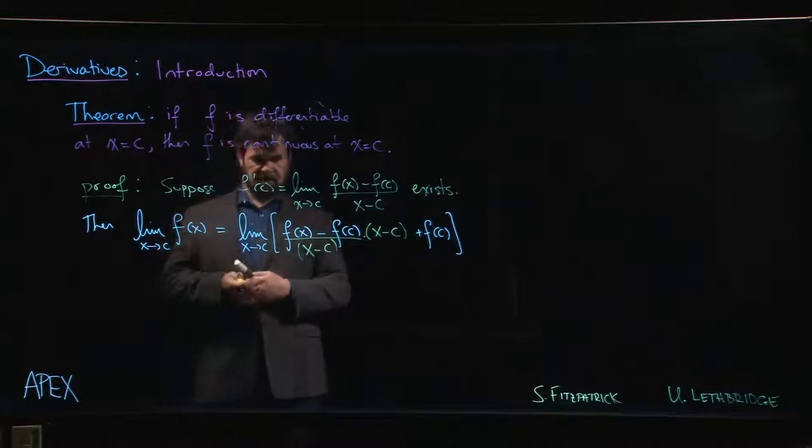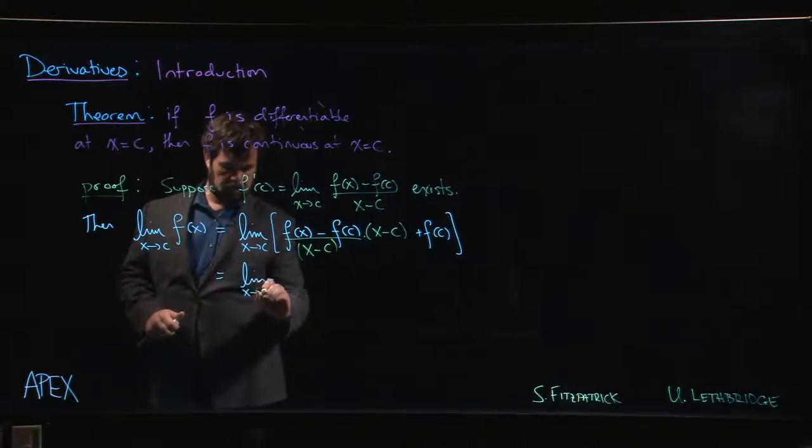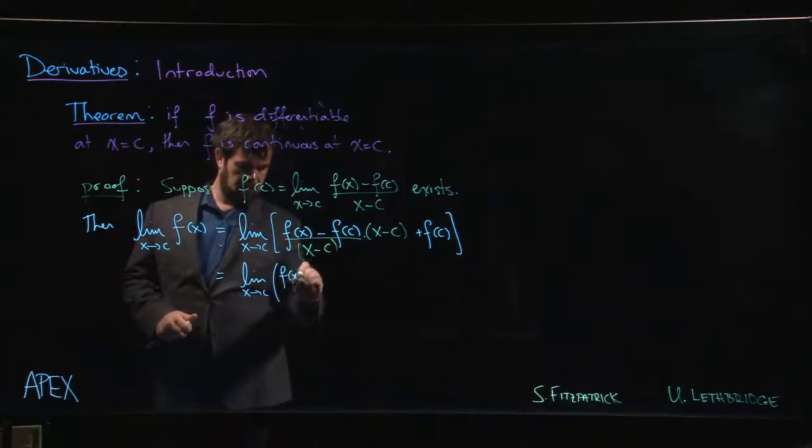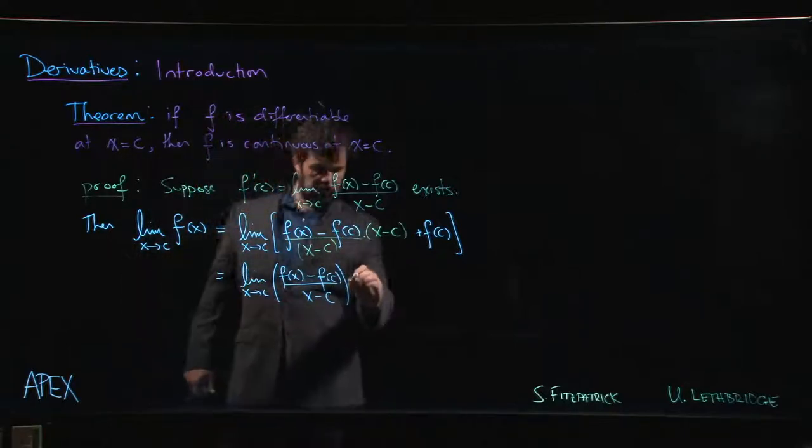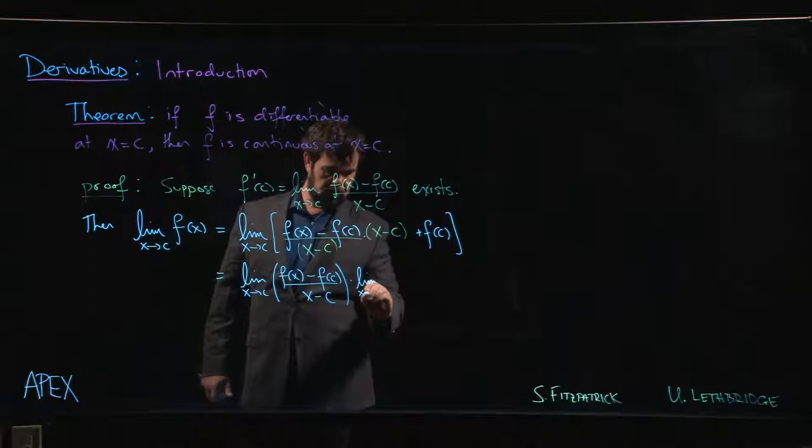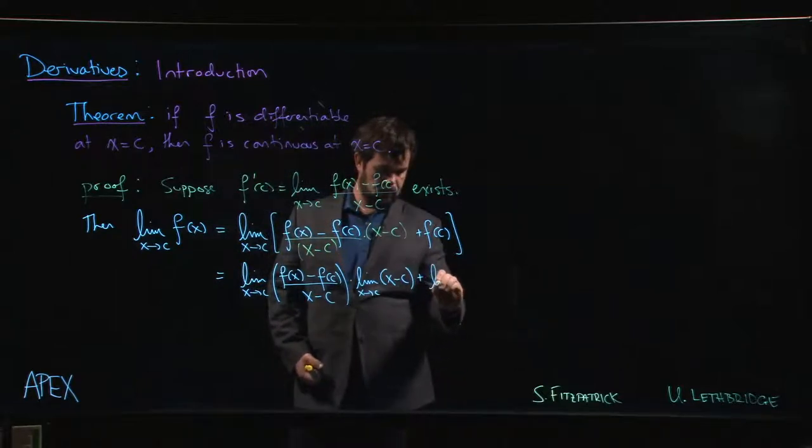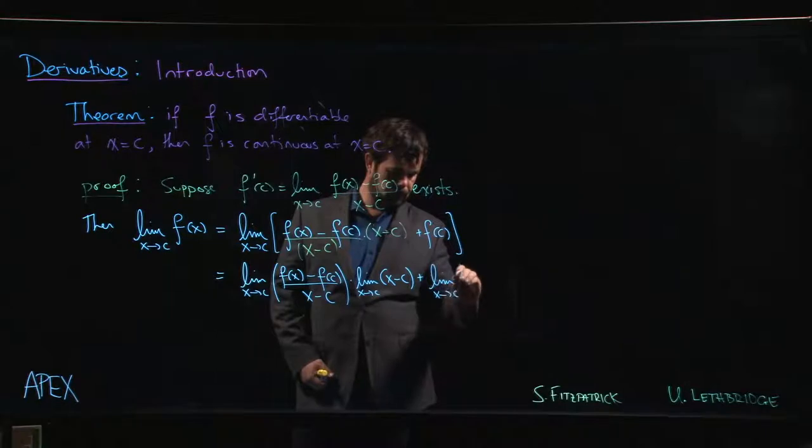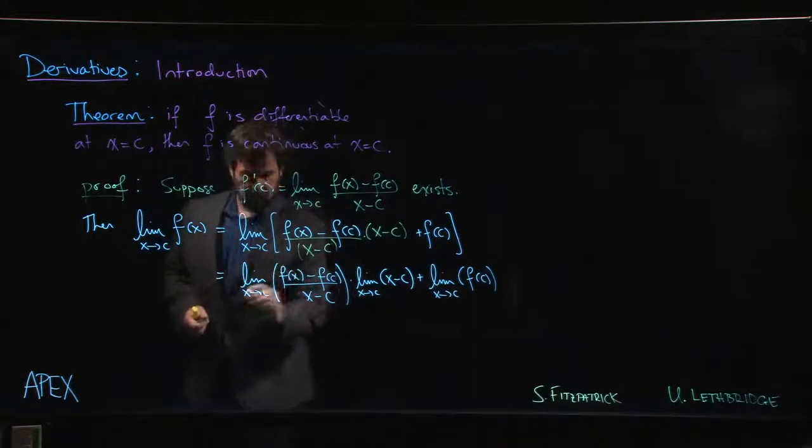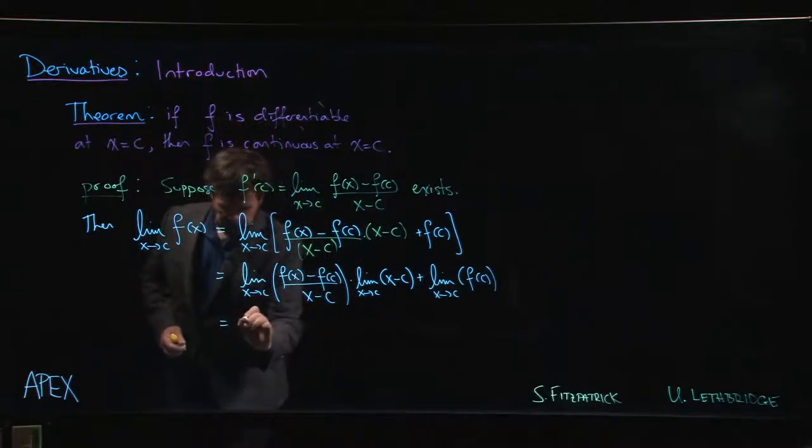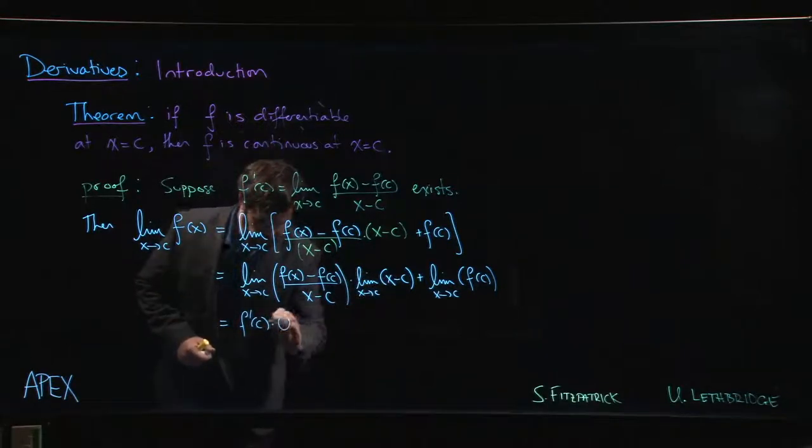But now we can use limit properties. This is going to be the limit x goes to c f of x minus f of c over x minus c times limit of a product is product of the limits, and then we also know that the limit of a sum is the sum of the limits. But what is this limit? Well, this limit we know is f prime of c because we assume that f is differentiable, multiplied by c minus c, multiplied by 0.